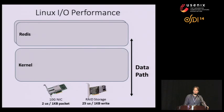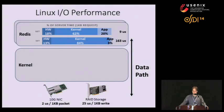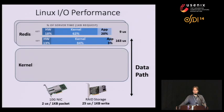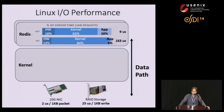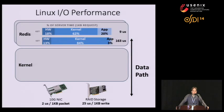We're going to see what the server-side latency of Redis is. On the right you see the total server-side latency, broken up into time spent in hardware, time in the Linux kernel, and time in the Redis application. There are two takeaways: first, looking at total latency — 9 microseconds for a GET request and 163 microseconds for an average one-kilobyte SET request — we're quite far from delivering the raw performance of our I/O devices. Second, the kernel accounts for 62% of latency for GET and 84% for SET.